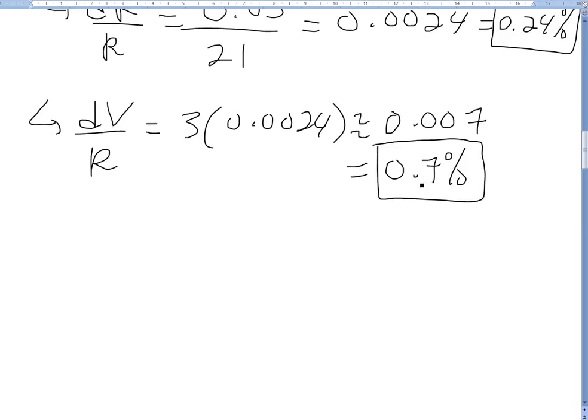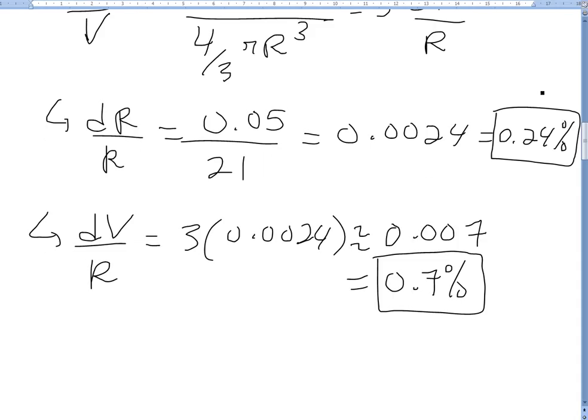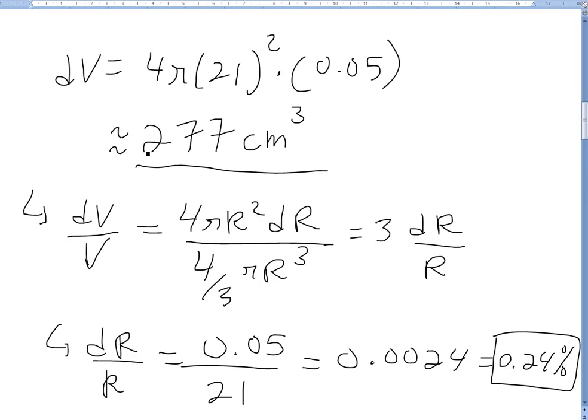So basically 0.7 percent error of the volume, the max we can get. And for the radius it's going to be 0.24 percent. So as you can see, this number may seem big, this 277 centimeters cubed, but it's actually not that big compared to the actual volume.